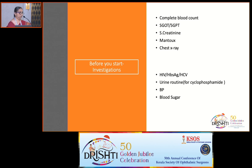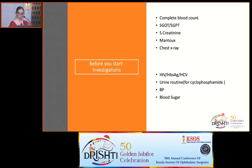For starting non-alkylating anti-metabolites, I do: complete blood count, SGOT, SGPT, creatinine, Mantoux, chest X-ray, Tridot (HIV), HBsAg, HCV, BP, and blood sugar. In the rare case where I start cyclophosphamide, I also do urine for RBC. The most commonly used conventional immunosuppressives in uveitis include this list — if you ask which one I go to, it is methotrexate.